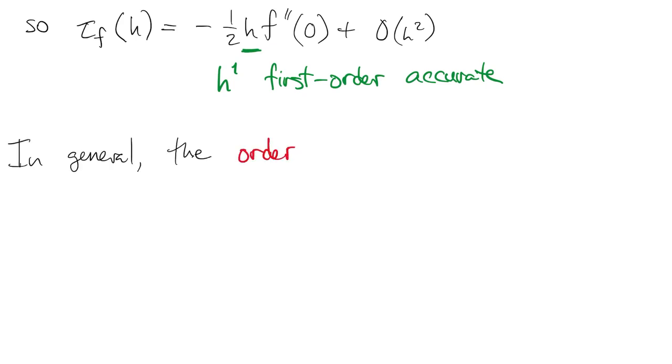In general, the order of accuracy of a formula is the leading power of h in the truncation error.